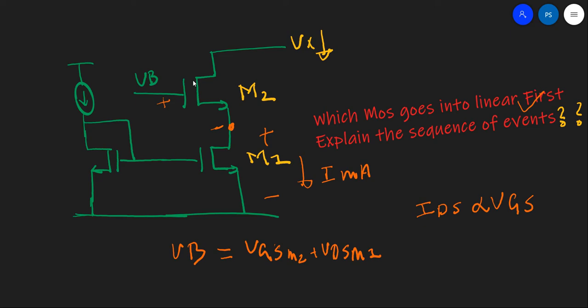Now when the MOS is in linear and it has some current, let me not go in that direction. Let's take a different direction. Let's assume that now M1 is still in saturation. M1 is still in saturation and it has a good VGS set by it and it has a good amount of VDS. So it is perfectly sitting in saturation.